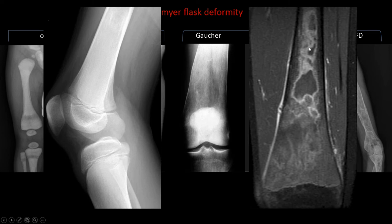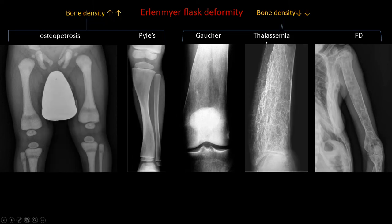MRI can also help identify the extent of marrow infiltration. Look for any previous abdominal radiograph for hepatosplenomegaly. Next is thalassemia: again there is osteopenia, very thin cortex, expanded bone.